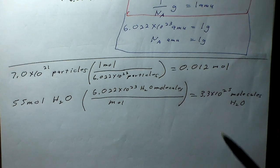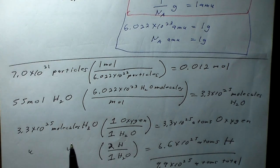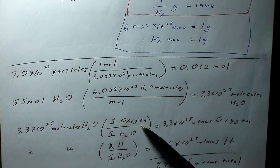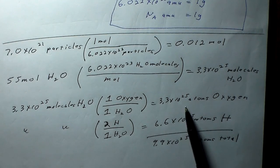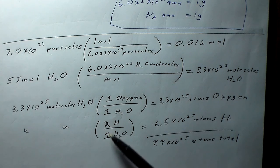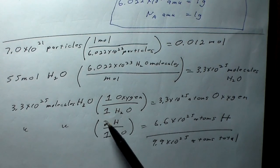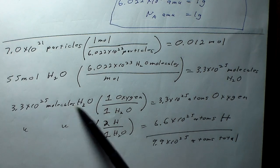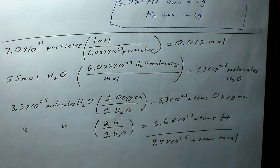From those 3.3 × 10²⁵ molecules of water, how many atoms of hydrogen and oxygen are present? Water is H₂O, so there is 1 oxygen atom per molecule — giving 3.3 × 10²⁵ atoms of oxygen. There are 2 hydrogens per molecule, so 6.6 × 10²⁵ atoms of hydrogen. Adding them: 3.3 + 6.6 = 9.9 × 10²⁵ total atoms.